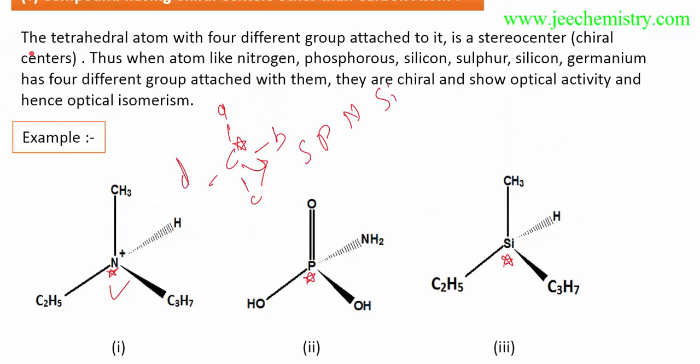Now the definition: The tetrahedral atom with four different groups attached to it is a stereocenter or chiral center. Thus atoms like nitrogen, phosphorus, silicon, sulfur, germanium that have four different groups attached are chiral and show optical activity and have optical isomers.